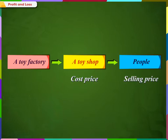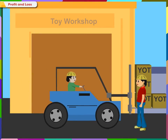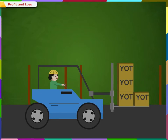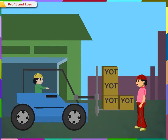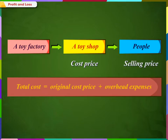We know that when the shopkeeper buys a toy from the factory, it becomes the cost price. And when he sells the toys to people, it becomes the selling price. Sometimes, the shopkeeper spends money on transporting the articles from the factory to his shop. This expenditure is an additional cost, and these expenses are included in the cost price of the article. So, total cost price is equal to original cost price plus the overhead expenses.